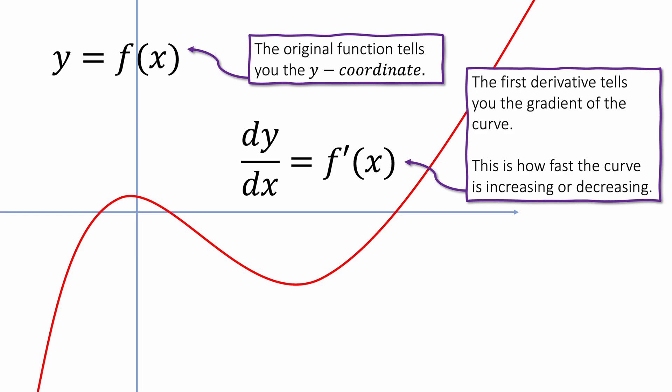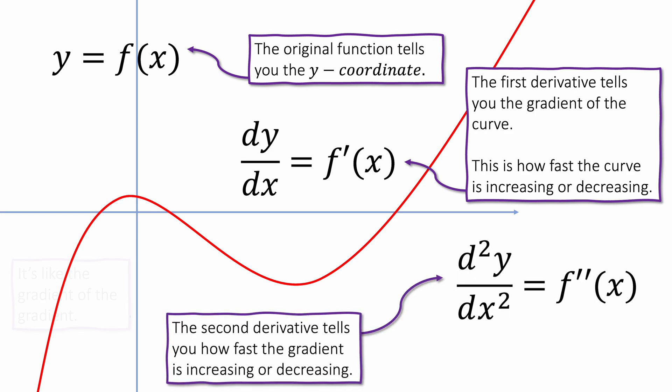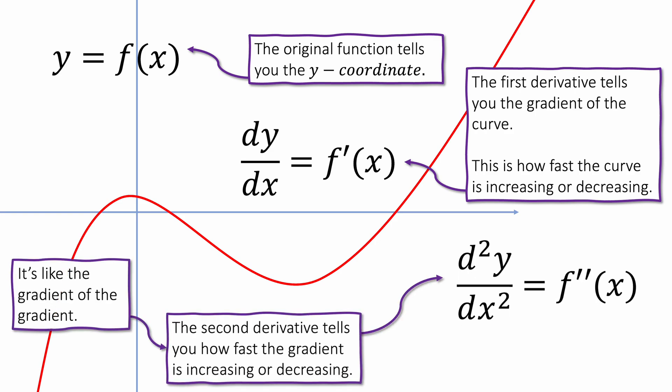The first derivative tells you how fast the function is increasing or decreasing. We can differentiate again, and this gives us the second derivative. This tells you how fast the gradient is increasing or decreasing — you can think of this as the gradient of the gradient. This is really useful for understanding the shape of the curve.